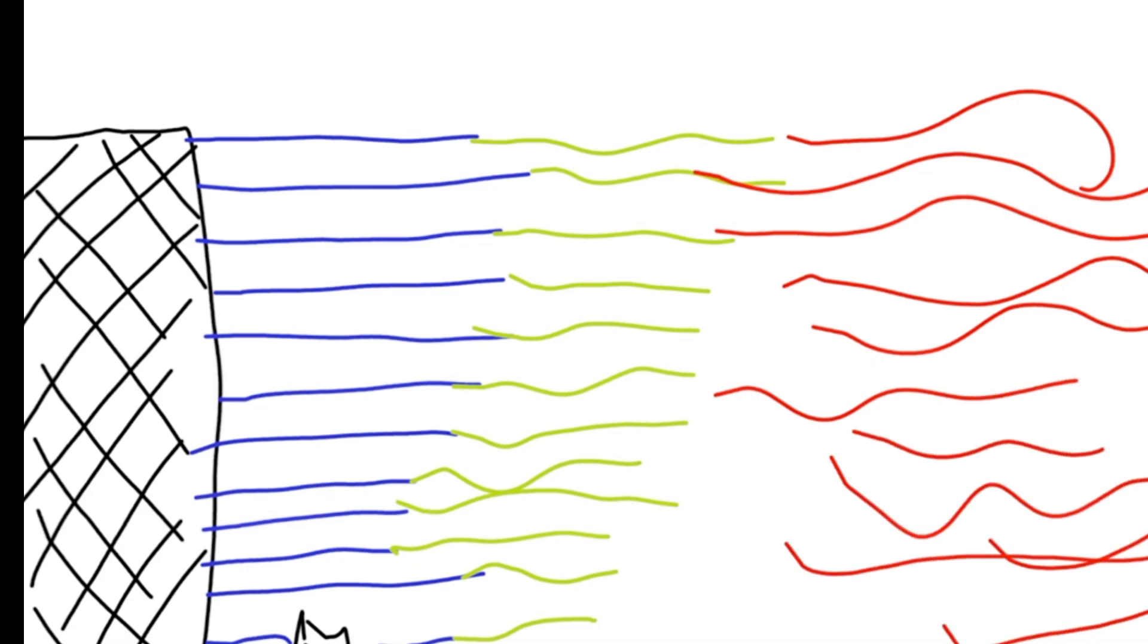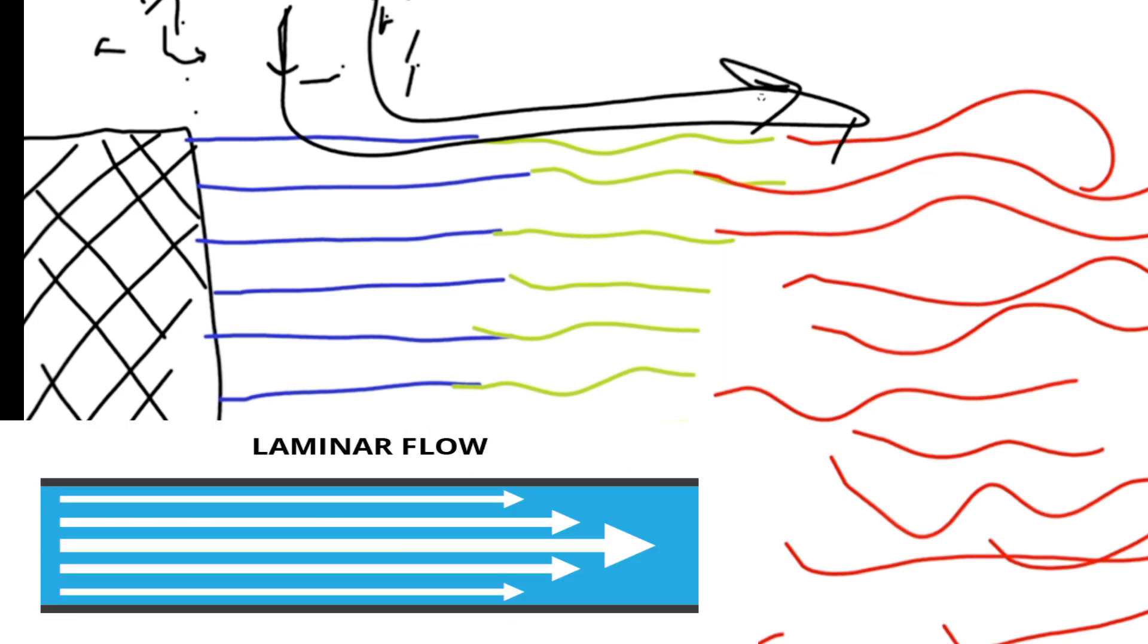The further away you work from the flow hood, the higher chance you've got of contamination. This is because as the air travels, it slowly becomes more turbulent. Of course, a flow hood is definitely your best bet, but they cost hundreds to thousands of pounds, so I like finding cheaper DIY alternatives that give me decent results.